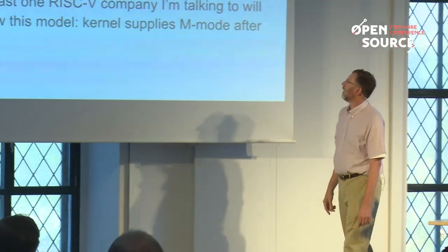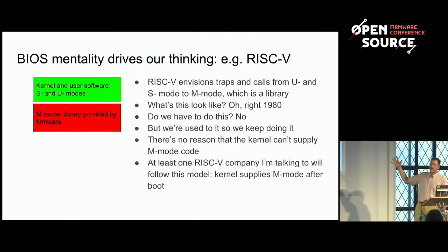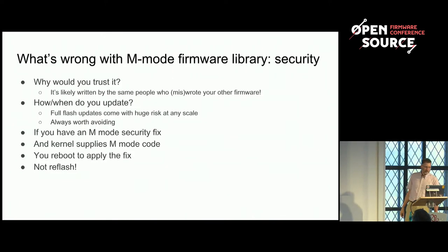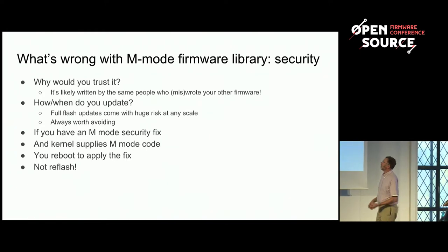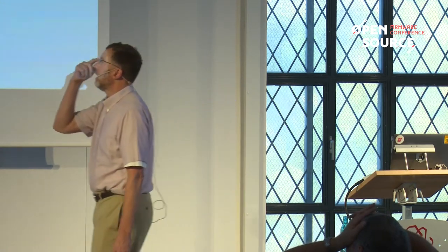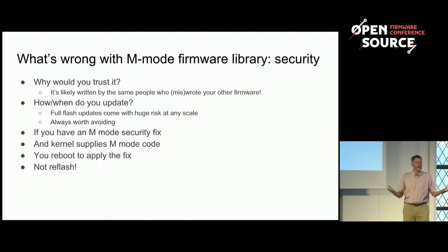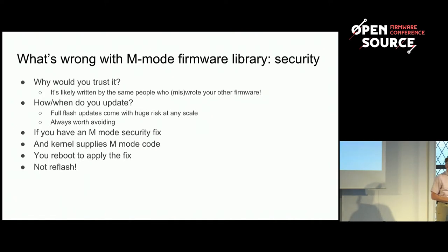I'm talking to one RISC-V company working with someone I know at DOE — they're not going to do that. In their RISC-V implementation, the M-mode code will be supplied by the kernel, not the firmware. Why would you trust M-mode firmware libraries? It's going to be written by the same people at these vendors — somebody is going to hack it up because they're trying to get a board out on schedule and they're going to insert bugs. If you have a bug in M-mode, you've got to reflash the firmware in all your machines. If you supply M-mode with the kernel, you reboot and you have the fixed M-mode code.